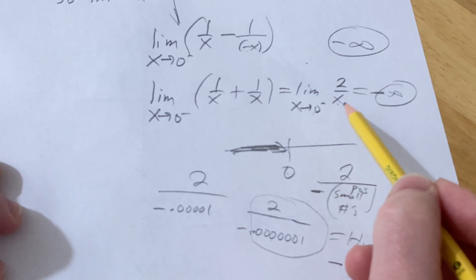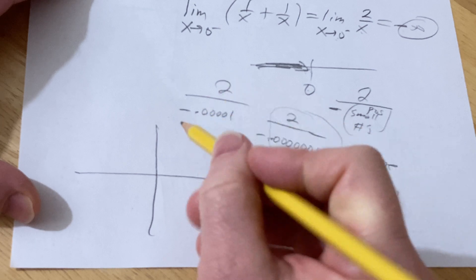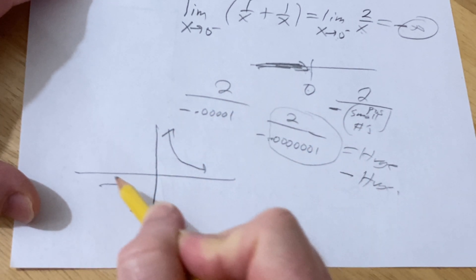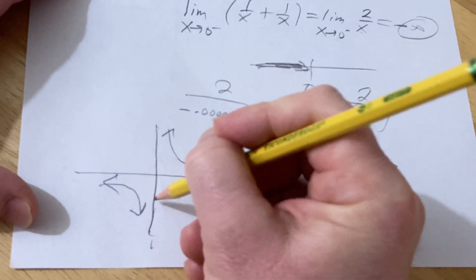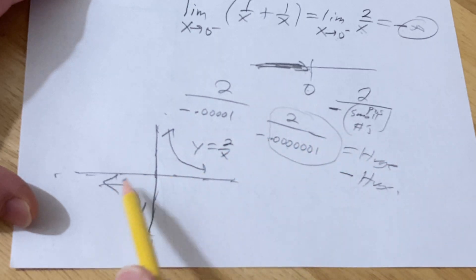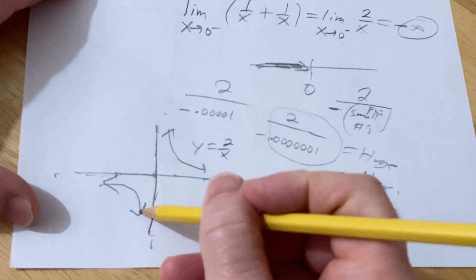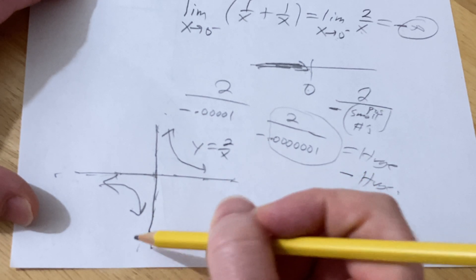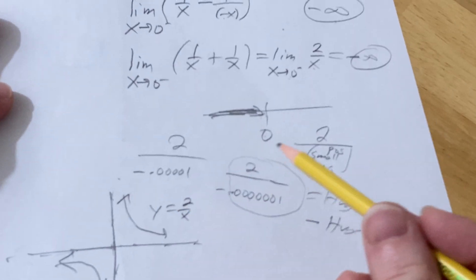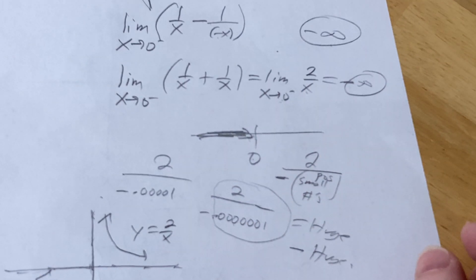Another way to do it is to think about the graph of this function, so let me just do it down here. So 2 over x looks something like this. And you've got a vertical asymptote and a horizontal asymptote. So as x approaches 0 from the left, the y values go down forever, so it approaches negative infinity. So that works as well. However, in cases where it's harder to graph the function, it's better to understand it this way. Good luck.